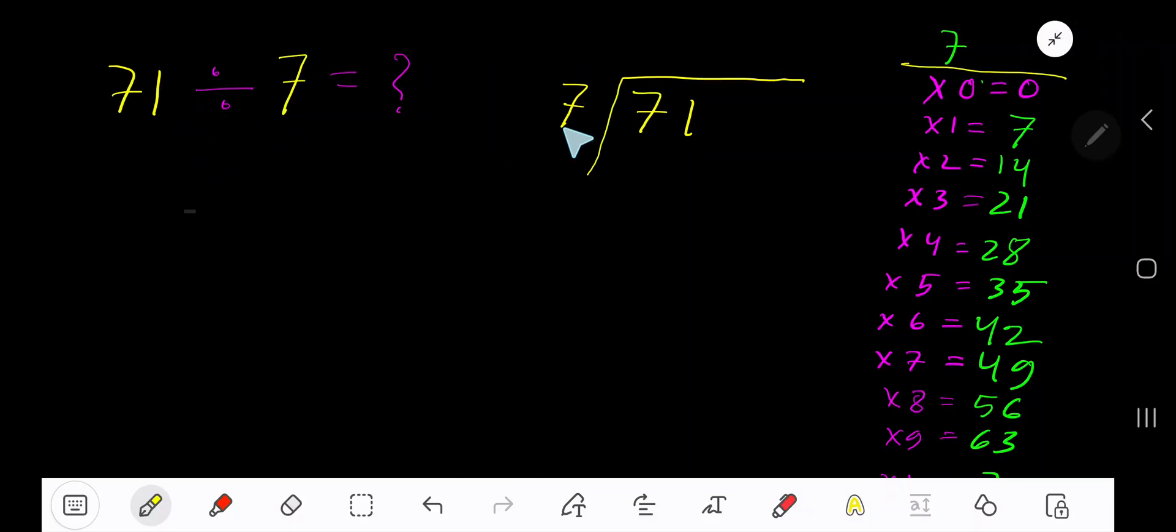71 divided by 7. Here 7 is a divisor, so we need the multiplication table of 7. 7 times 0 is 0, 7 times 1 is 7, 7 times 2 is 14, 7 times 3 is 21. To find the multiplication table of 7, just add 7 with the previous step: 0 plus 7 is 7, 7 plus 7 is 14, 14 plus 7 is 21.